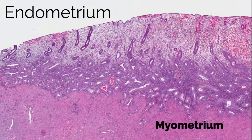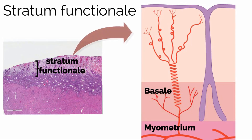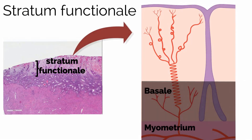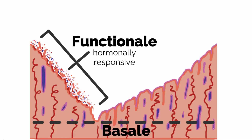The endometrium has two layers: the stratum functionale and the stratum basale, also known as the stratum functionalis and basalis. The stratum functionale is the luminal layer and contains the tubular glands surrounded by endometrial stroma, as well as the distal portions of the spiral arteries and its arterioles. The stratum functionale is hormonally responsive and proliferates and degenerates with the menstrual cycle. It is the temporary layer of the endometrium that is lost during menses.